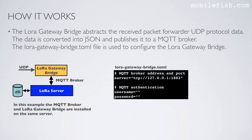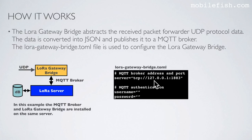The LoRa Gateway Bridge abstracts the received packet forwarder UDP protocol data, converts it into JSON, and publishes it to a MQTT broker. The LoRa Gateway Bridge TOML file is used to configure the LoRa Gateway Bridge. This shows the MQTT broker address and port. In this example, MQTT authentication is not set. The MQTT broker and LoRa Gateway Bridge are installed on the same server as indicated by the IP address.